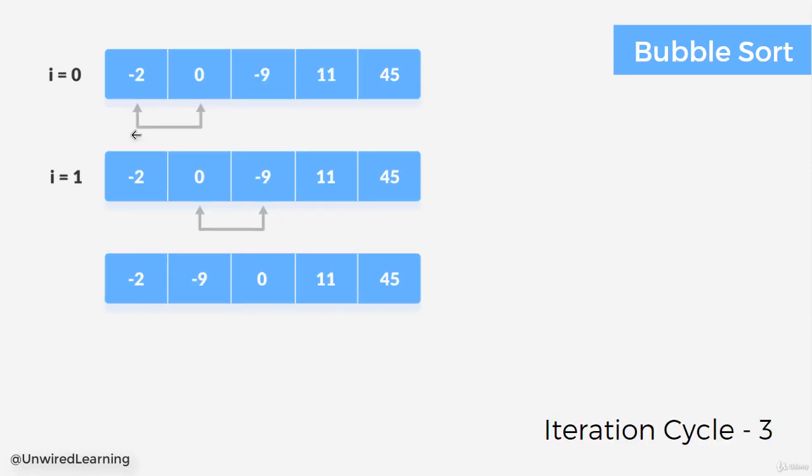In our next iteration cycle we are going to compare index 0 with index 1, no swapping. Index 1 with index 2, we need to swap since minus 9 is less than 0. And this is going to be our sorted list.